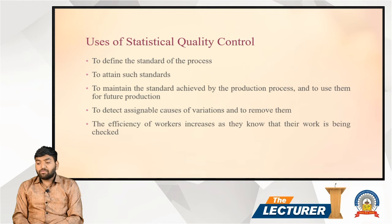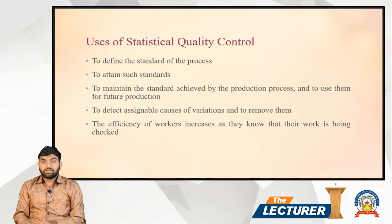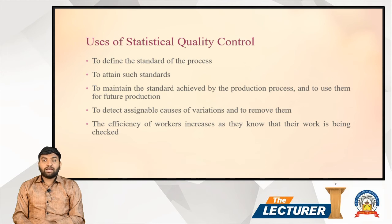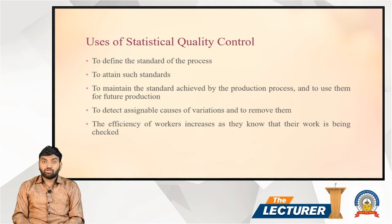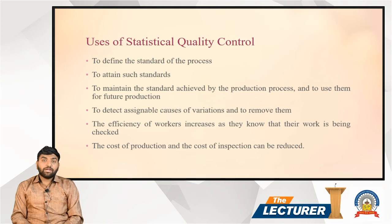The efficiency of workers increases as they know that their work is being checked. Furthermore, the cost of production and inspection can be reduced. In Statistical Quality Control, the cost of production will automatically decrease because defects are detected early and corrective action is taken promptly.